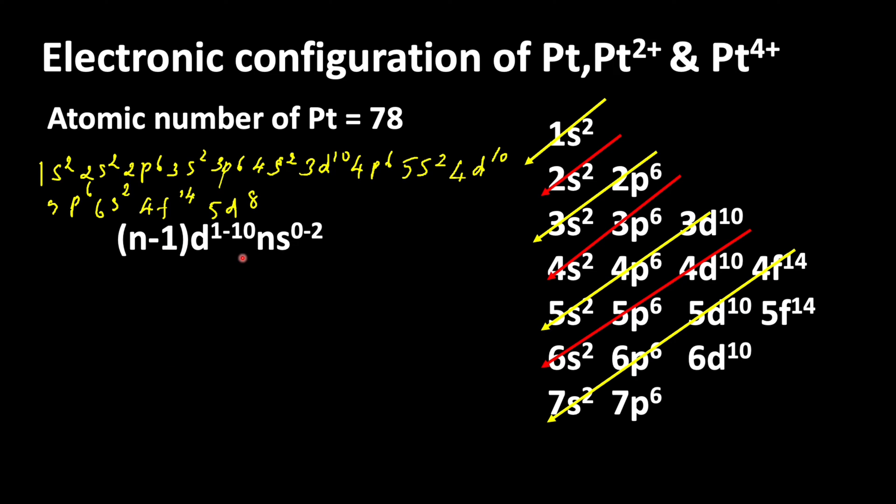For d-block elements, the notation is (n-1)d¹⁻¹⁰ ns⁰⁻². It means first we write d orbitals, inner d orbitals, then we write outer s orbital. Since platinum is a d-block element, we are going to write 5d⁸, then 6s². So we change the electronic configuration to 5d⁸ 6s².